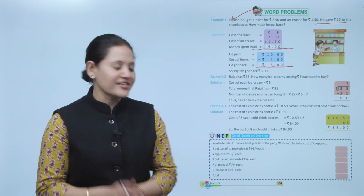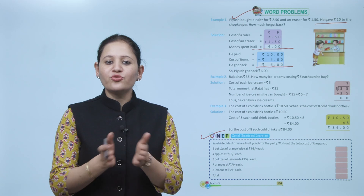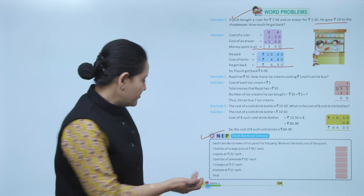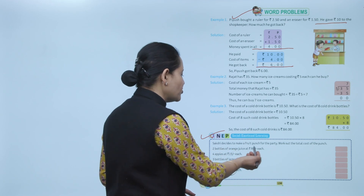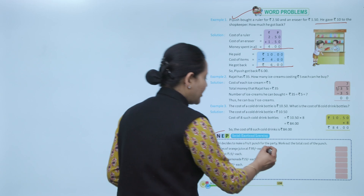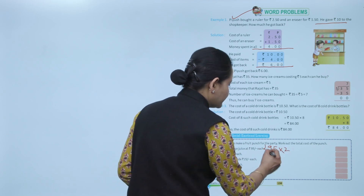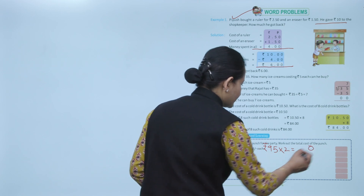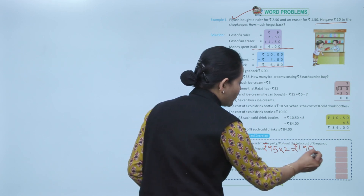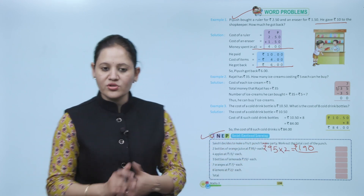Next is social emotional learning. Sakshi decides to make a fruit punch for a party — work out the total cost of the punch. For example, two bottles of orange juice at rupees 95 each: 95 into 2 gives rupees 190. Like this, count the cost for each item and total them.